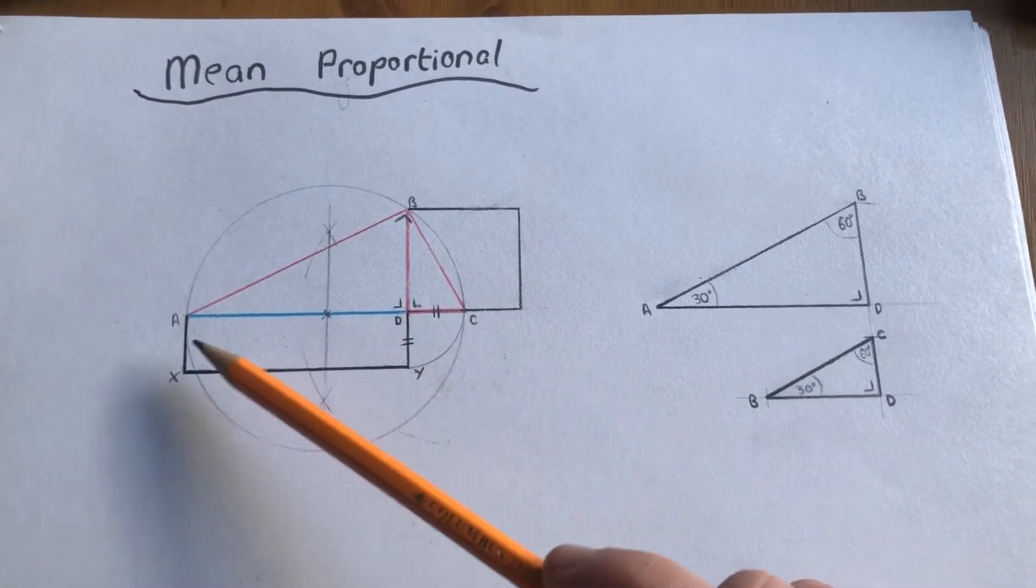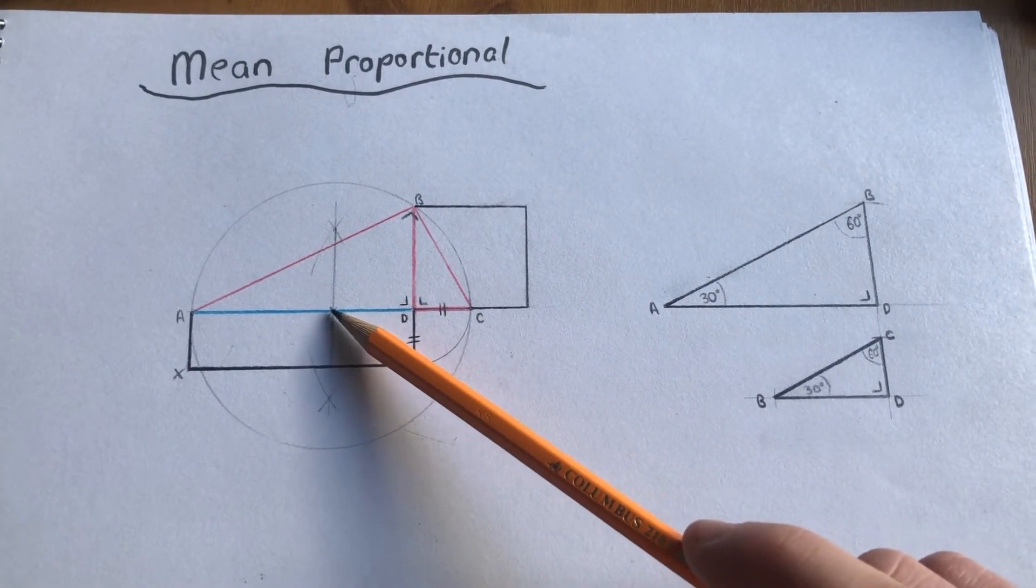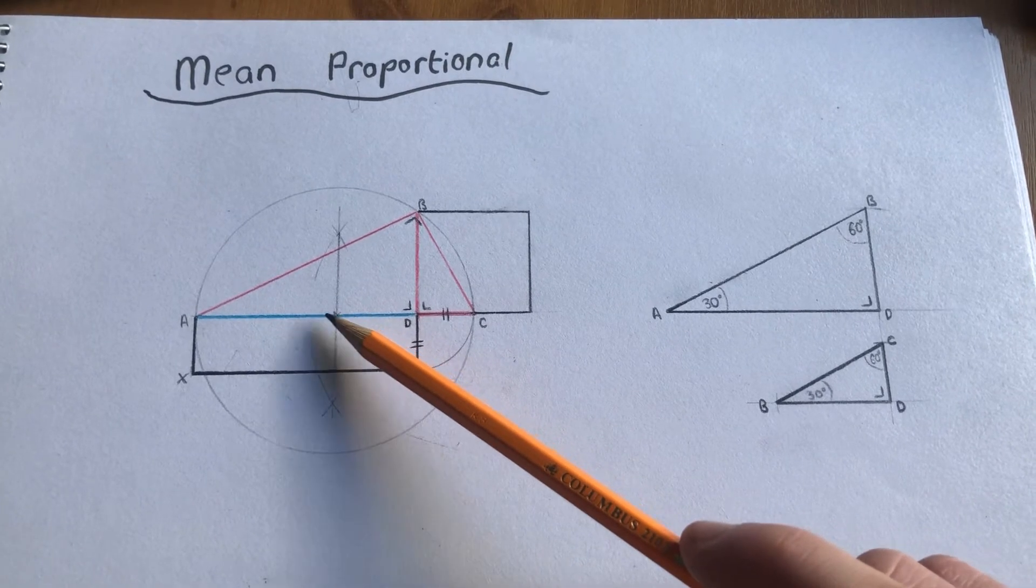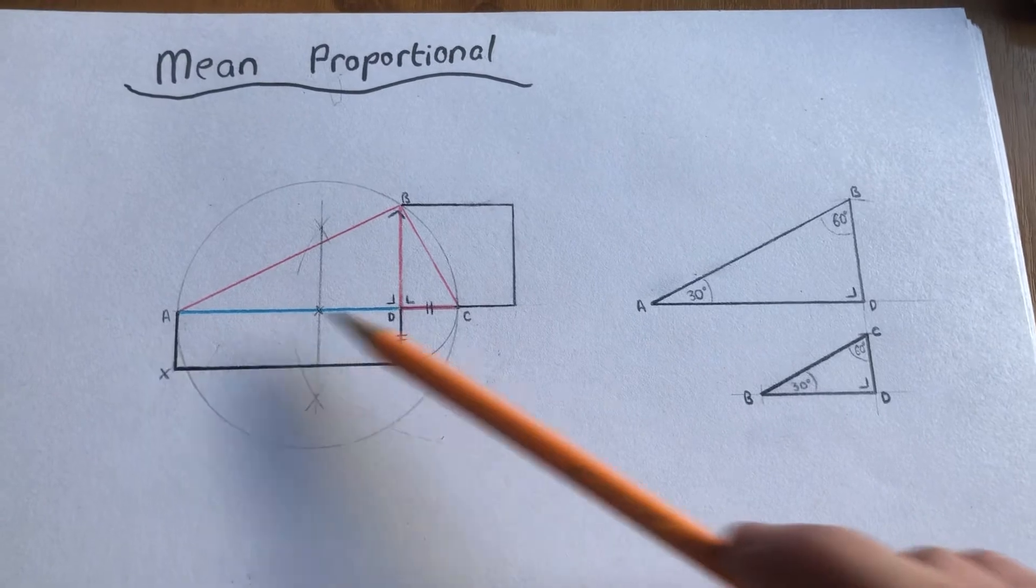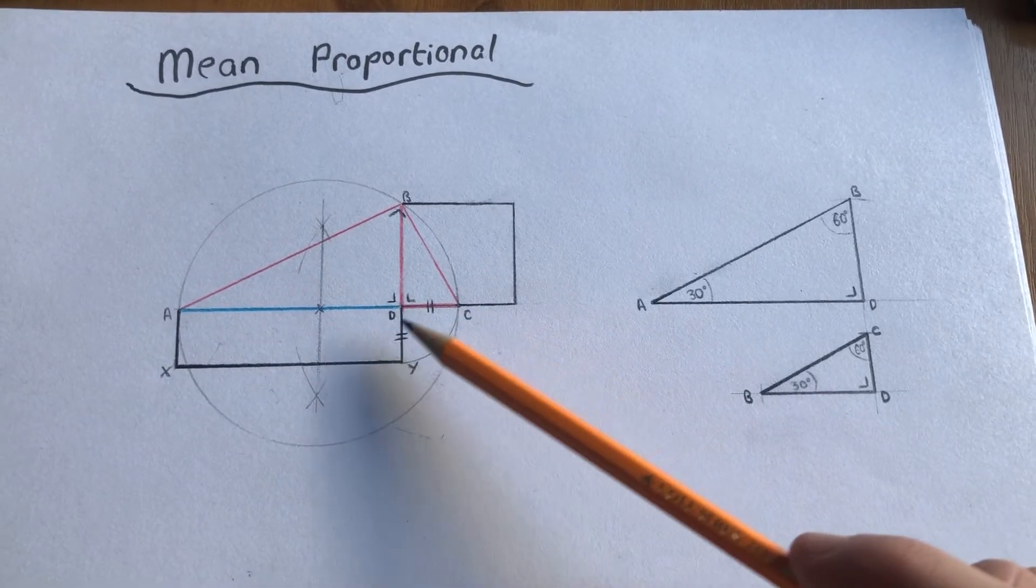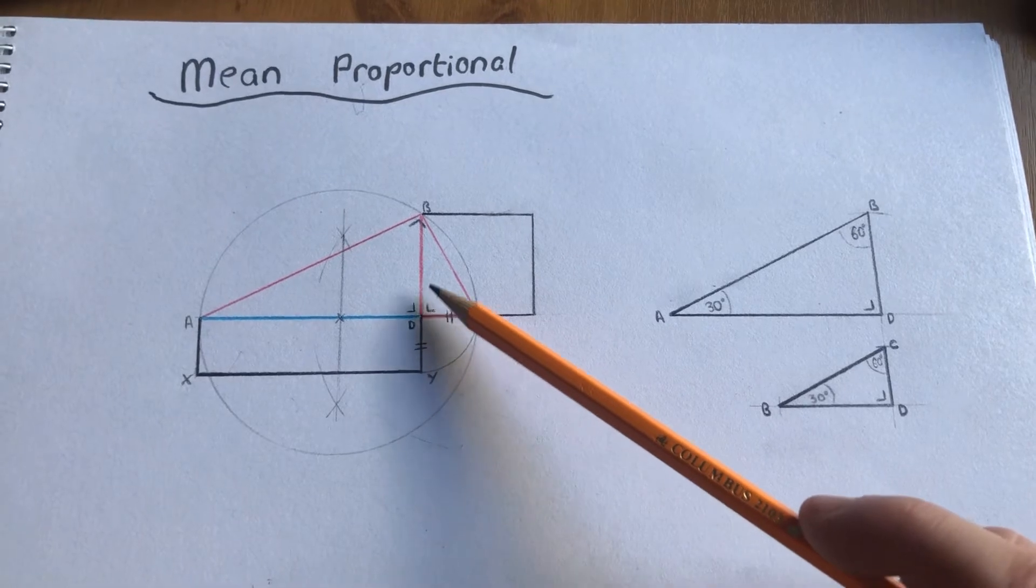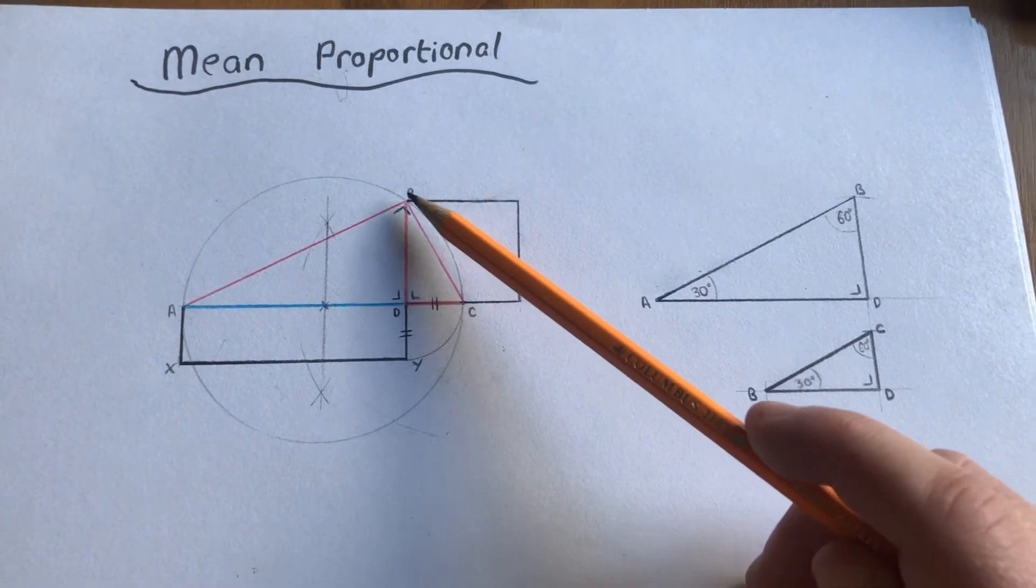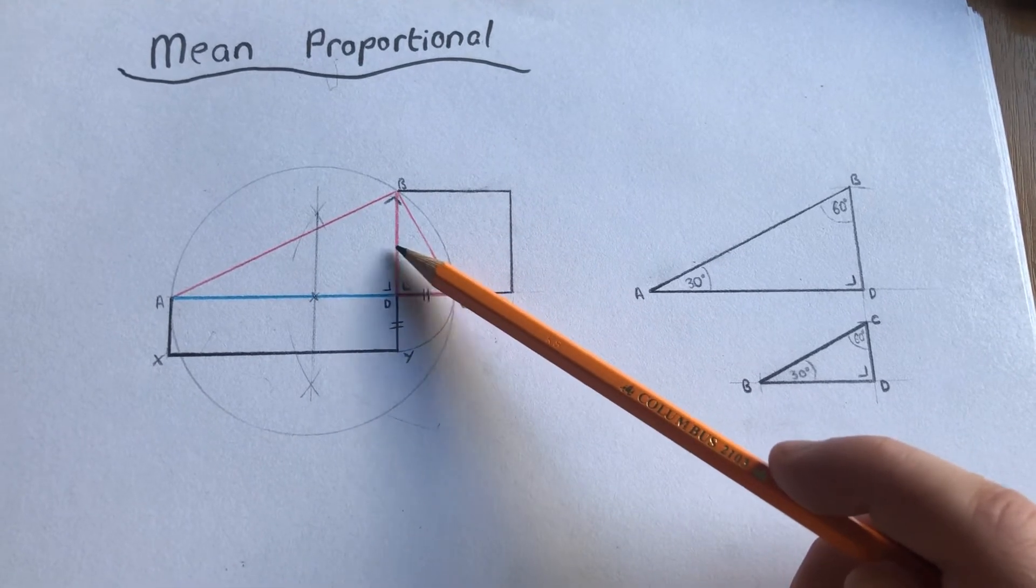Then we bisect the line AC to find the midpoint. This gives us a radius for our circle that goes through points A and C. Then from point D we construct a perpendicular line which hits the circle at point B. This is our geometric mean.